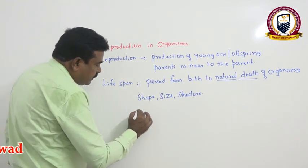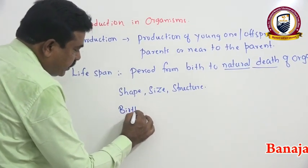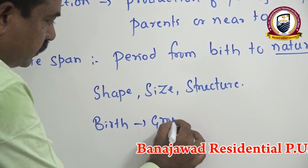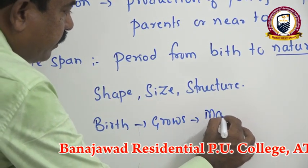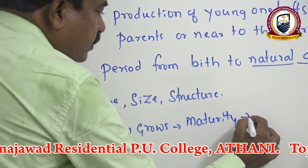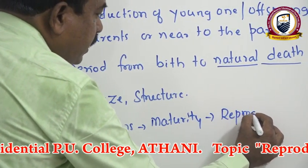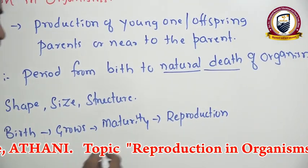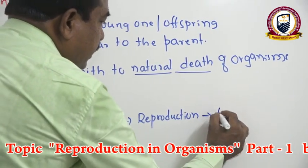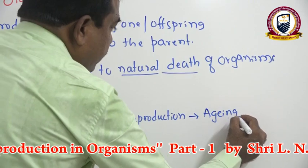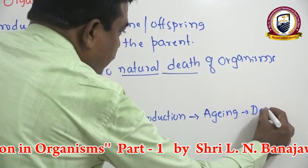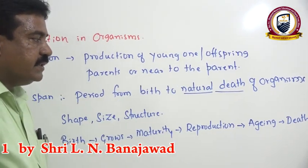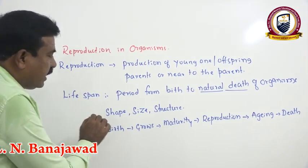As we know, any organism in nature, after birth, it grows, then attains maturity. After maturation, it starts production of young ones — that process we call reproduction. Then after reproduction, aging takes place, and finally death. Therefore, the period from birth to natural death of an organism we generally call life span.